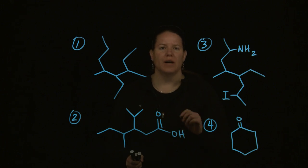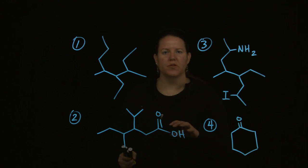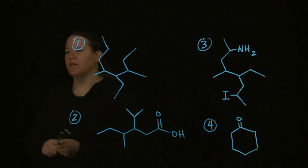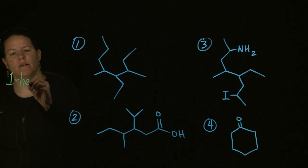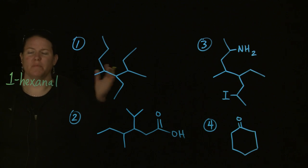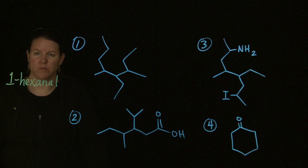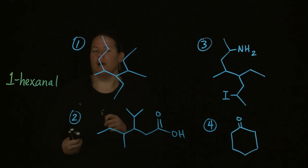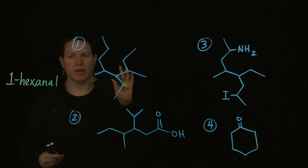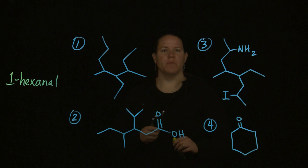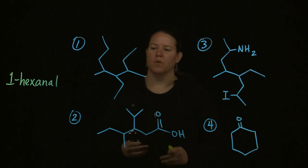Sometimes we'll give you a name and you need to draw out the structure, but usually that's of the simplest variety. For instance, we would give you something like 1-hexanal and it's usually some kind of multiple choice problem - which of the following is 1-hexanal. Usually you're given a structure and you're asked to name it.